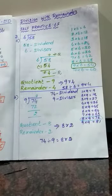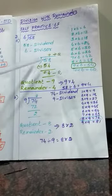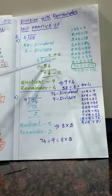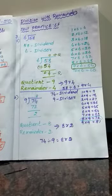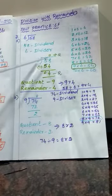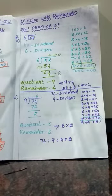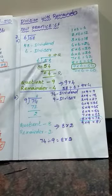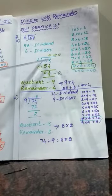Now you have to divide using the multiplication table. At the side you have to write the 6 table. First you have to compare the first digit of the dividend and the divisor number. What is the first digit of the dividend? The first digit is 5. Divisor is 6. Whether 5 is less than 6 or greater than 6? 5 is less than 6. If the first digit is less than the divisor, then you have to take 2 digits.